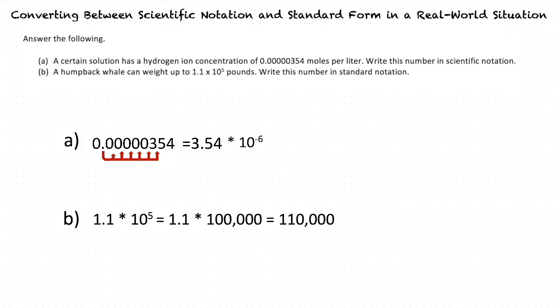To sum everything up, when we have a number in scientific notation, we simply move the decimal to the right until we have one number between 1 and 10, and then we multiply that number by 10 to the negative power of the number of decimal places. And to write a scientific number in standard notation, we just multiply by 10 to whatever exponent it has.